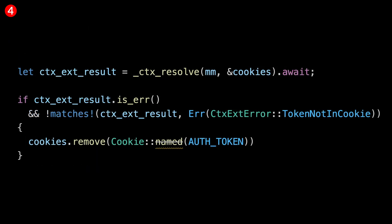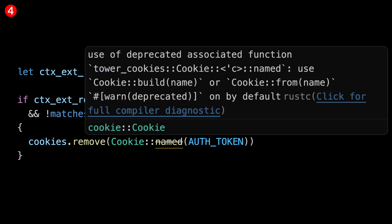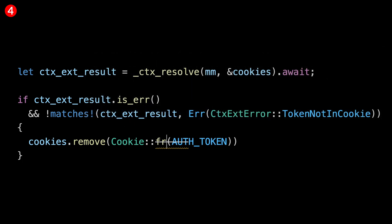Step four is not directly related to axom, but some of the Tower libraries might have deprecated APIs. In this case, we no longer use cookie name — we either use cookie build or cookie from. We're going to use cookie from, and then this one is clean.